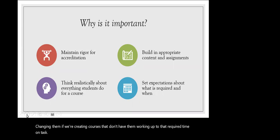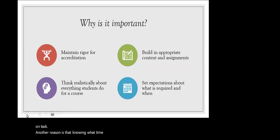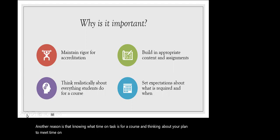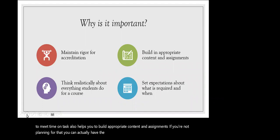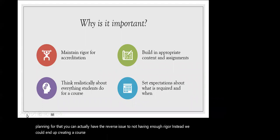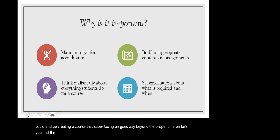Another reason is that knowing what time on task is for a course and thinking about your plan to meet it also helps you to build appropriate content and assignments. If you're not planning for that, you can actually have the reverse issue — instead of not having enough rigor, we could end up creating a course that's super taxing and goes way beyond the proper time on task. If you find this happening, you'll need to figure out where you can scale back while still meeting the overall objectives for the course.